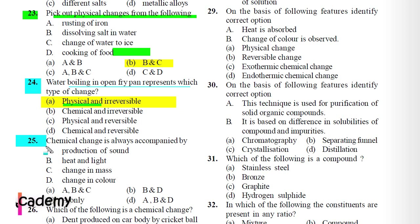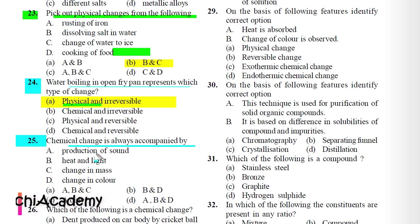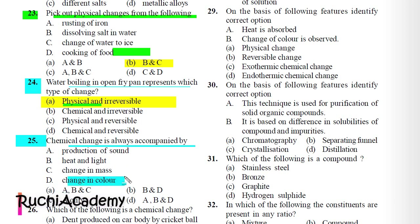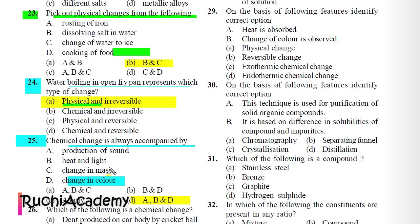Question 25: Chemical change is always accompanied by: A) Production of sound, B) Heat and light, C) Change in mass, D) Change in color. Correct answer is A, B and D. A chemical change produces heat, light, and sound, and the products are of different colors than the reactants.